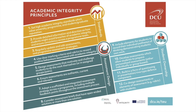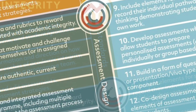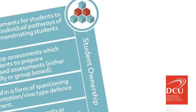The 12 principles can be broadly classified into three categories. The first category looks at ways in which academics can promote high academic standards. The second category encourages academics to design assessment strategies that promote good academic practice — in a sense, designing out plagiarism. The third category is how we can design assessment strategies whereby students are empowered or involved in the assessment strategy.